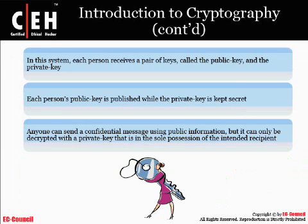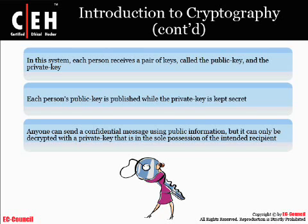In many systems, there's actually a pair of keys that are used, called the public key and the private key. Each person's public key is publicly available and can be used for encryption only. It requires the private key in order to be able to decrypt the data. This is commonly referred to as PKI.